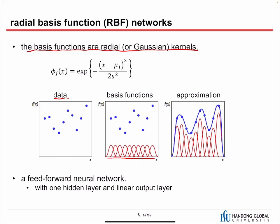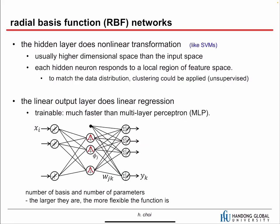The radial basis function network is actually a linear regression, but at the same time it is a kind of feedforward neural network with one hidden layer. In that hidden layer, the first layer is not trainable — we just provide the basis functions and they are fixed. The output layer with parameter w is trainable. From input X, we apply the nonlinear functions to get the hidden layer representation, and this layer is fixed.